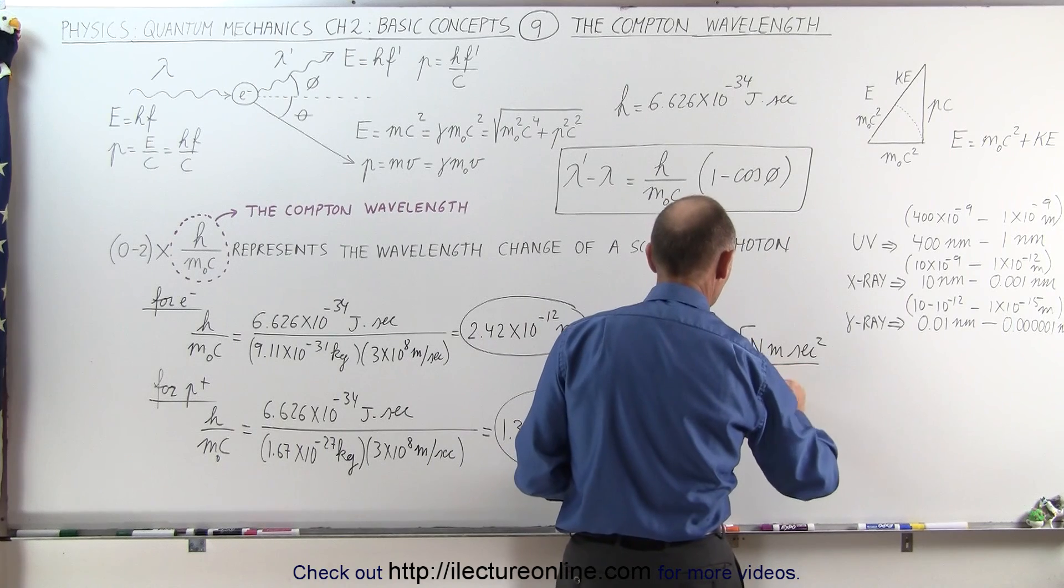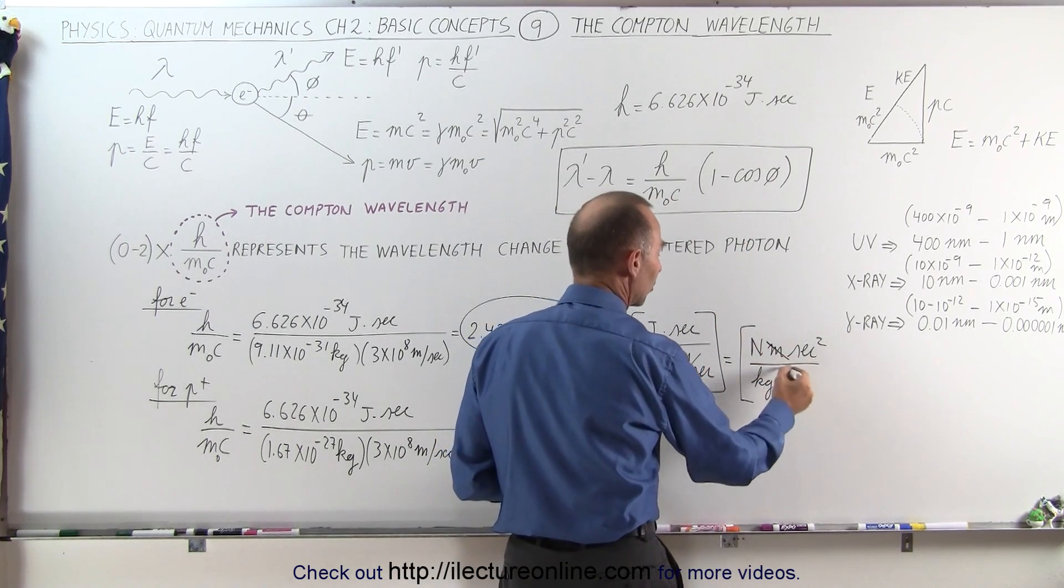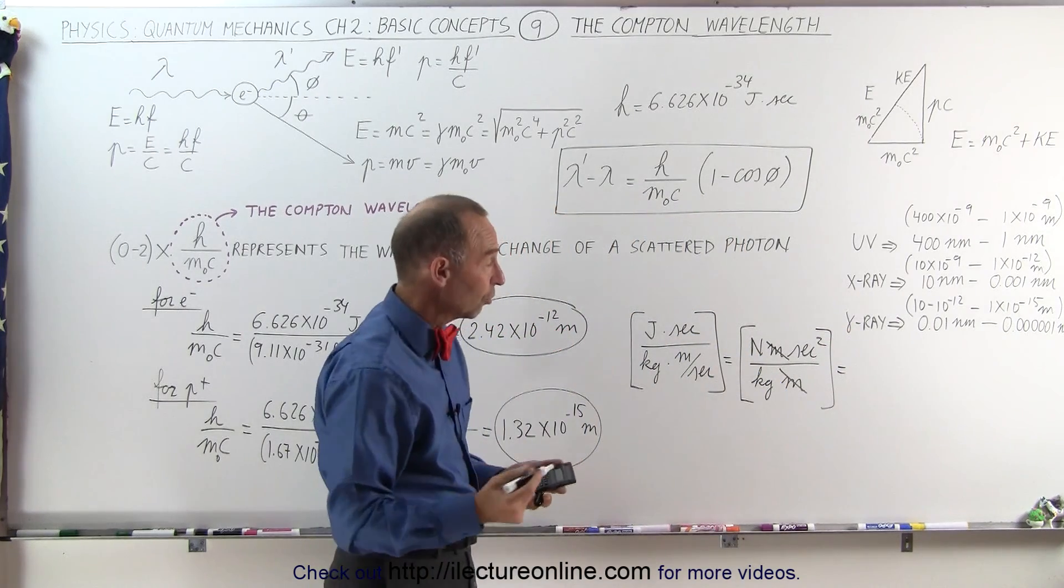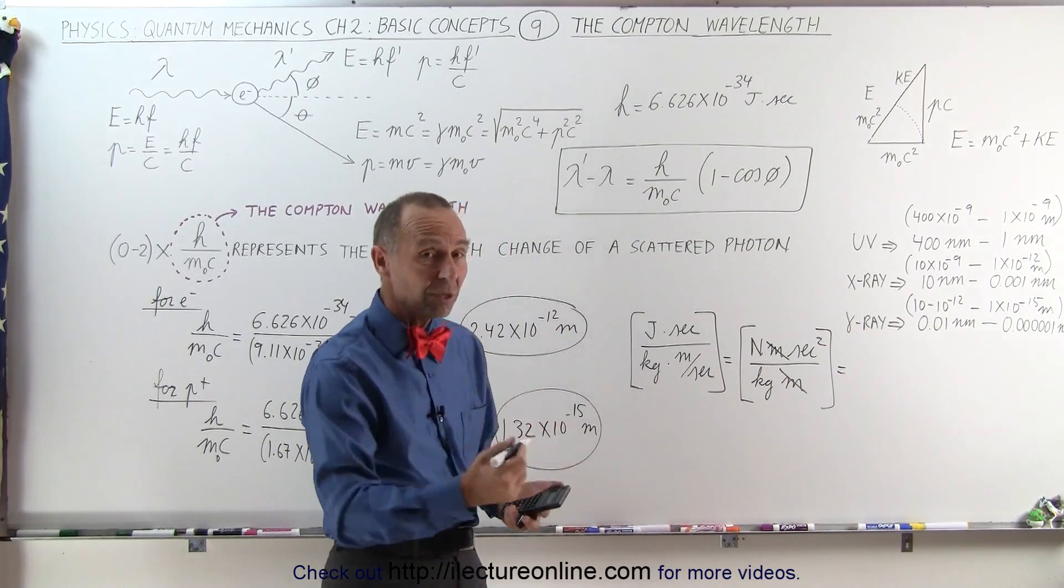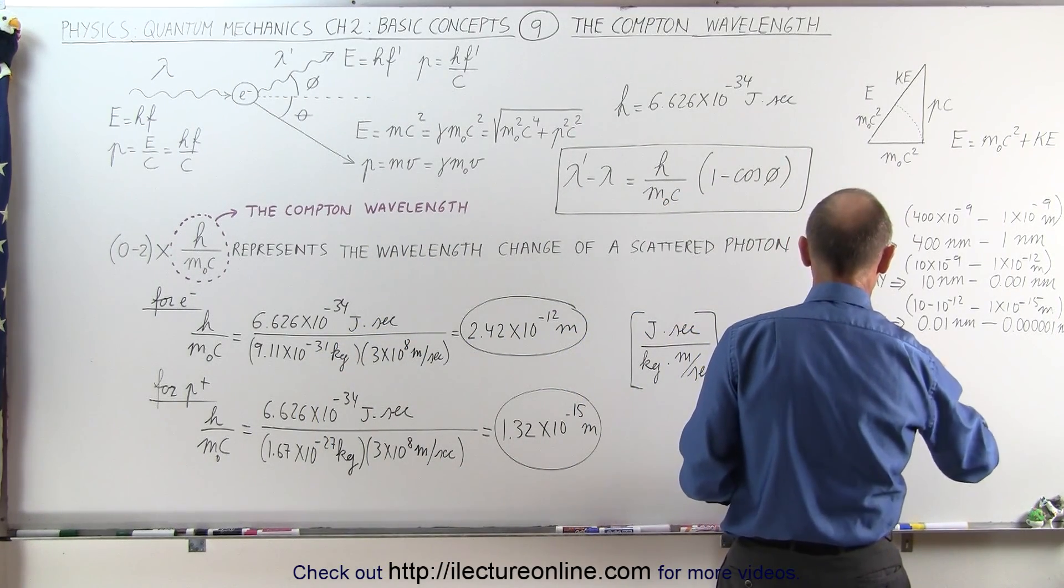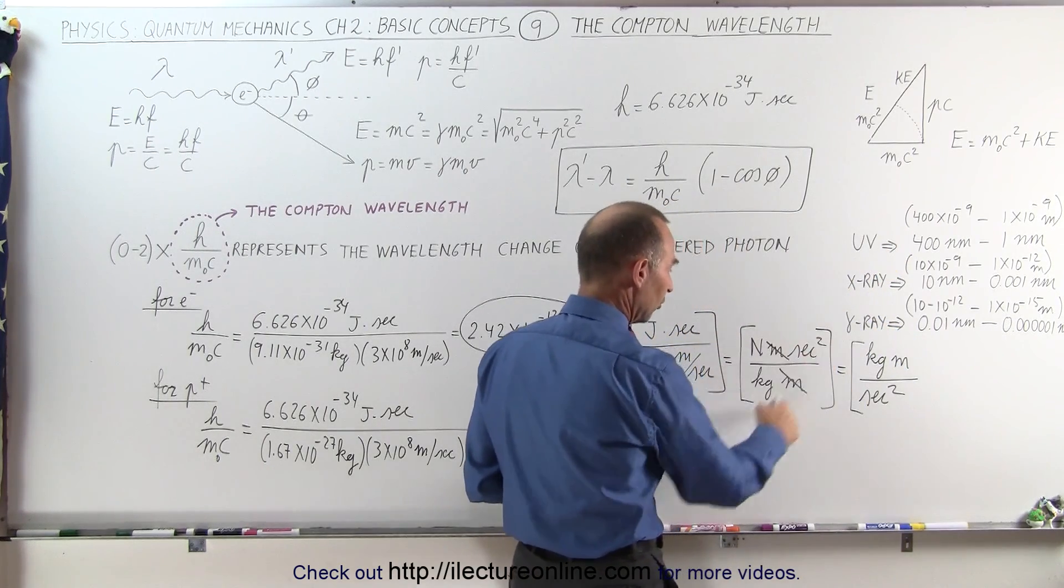Then we have kilograms divided by meters, and right away we can see that these meters will cancel out those meters. Now a Newton is a force, the units of force, which is a kilograms meters per second squared. So we can replace that one by kilograms meters per second squared. That's for Newtons.